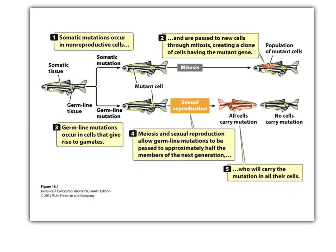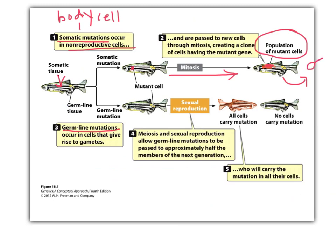The difference between a somatic mutation and a germline mutation: a somatic mutation occurs in a non-reproductive body cell, like a skin cell. As that mutated cell grows through mitosis, it produces a population of mutant cells, but these are not passed on. If that organism has offspring, the babies are fine because we don't pass on skin cells.